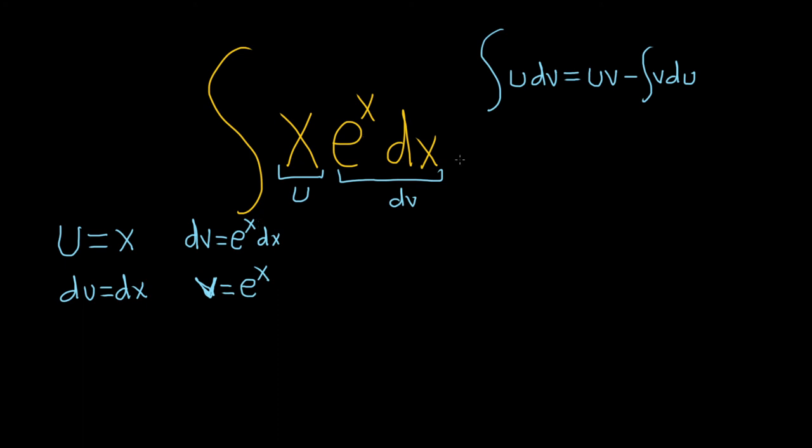All right. Let's go ahead and use the formula right here, right underneath it so you see it. So it's going to be uv, so x e to the x, u times v, x e to the x. It takes a little bit of practice when you first do it.